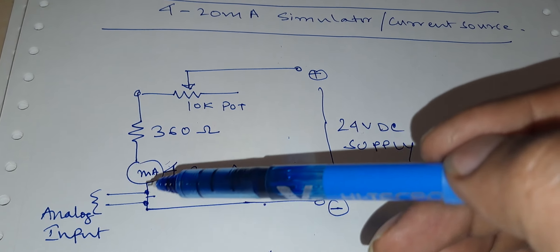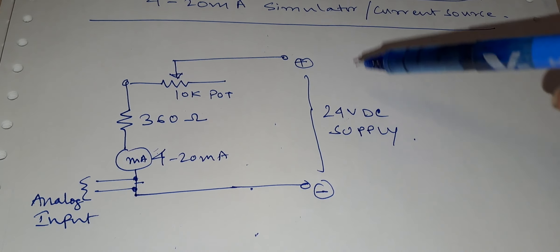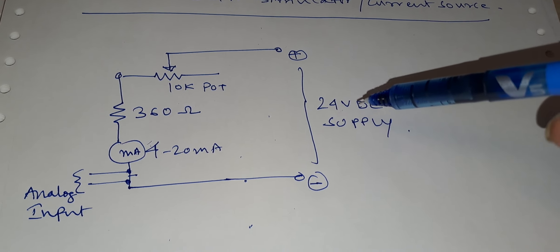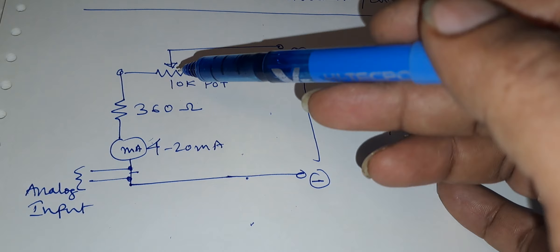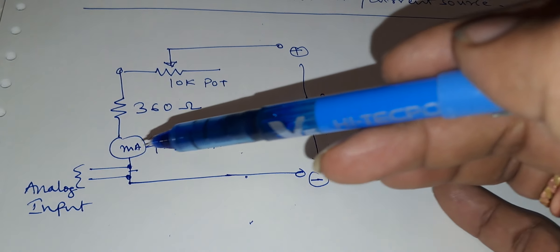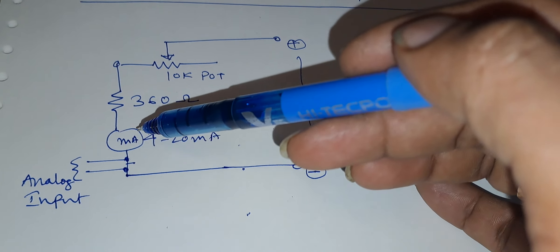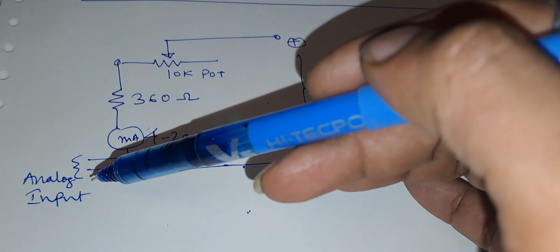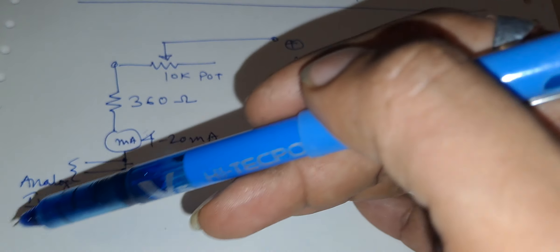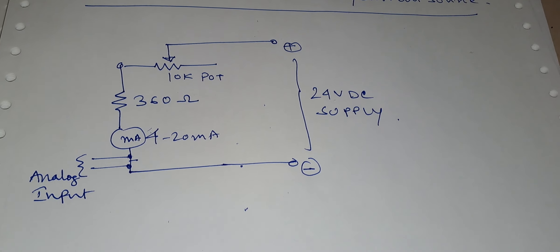This is the basic circuit diagram. Here is the 24 volt DC supply, and when we adjust the potentiometer knob there will be a current change from 4 to 20 mA across the mA meter. The same current will be reflected in the analog input card and it will show us the scaling of the card. This is a very basic and simple circuit to implement.